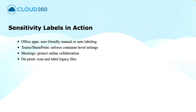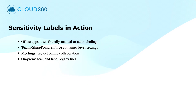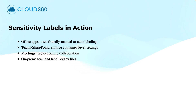In a nutshell, these sensitivity labels go far beyond emails and documents. You can protect cloud collaboration spaces, virtual meetings, and even legacy on-premises files — all with a unified Microsoft Purview strategy. This brings us to the end of this video. I hope this was informative to you. Thanks for watching.